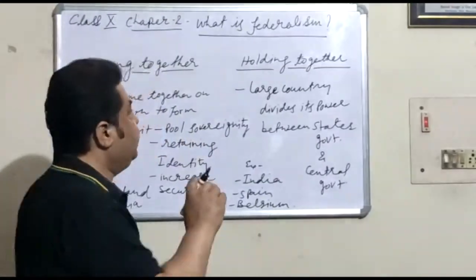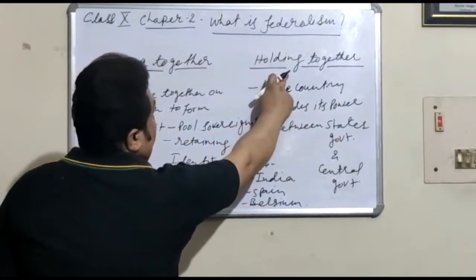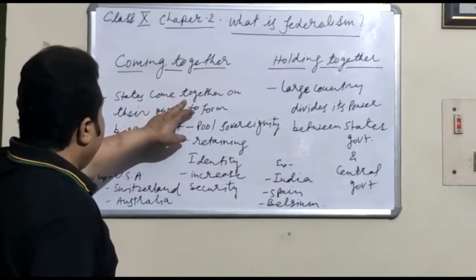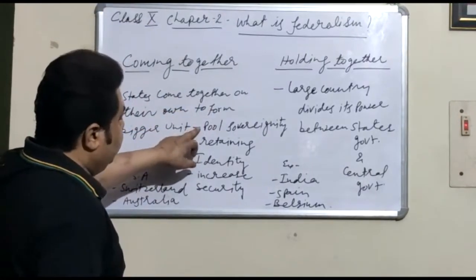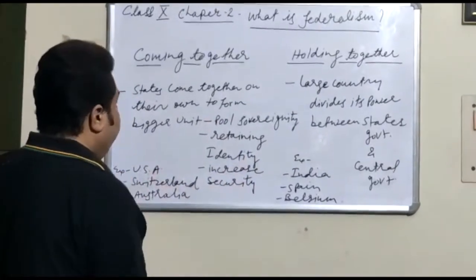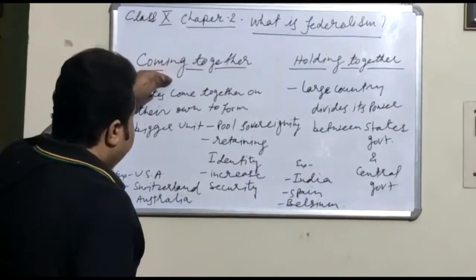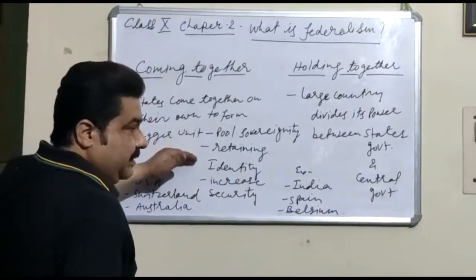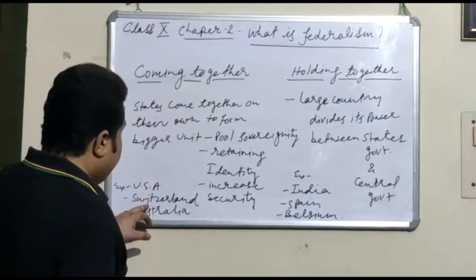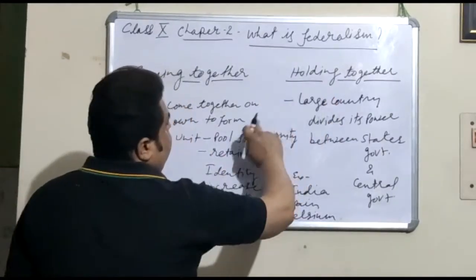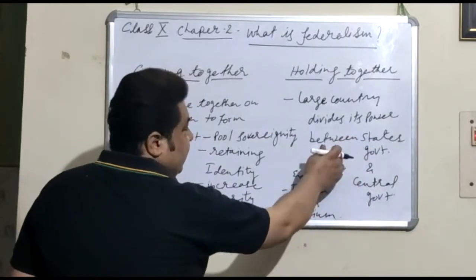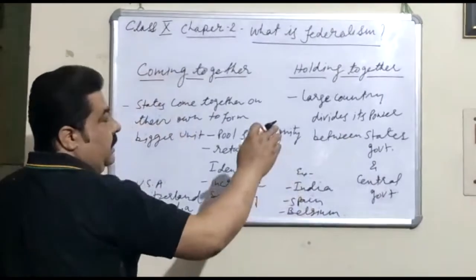There are two kinds of federations. One is the coming together federation. In a coming together federation, different states come together on their own, at their own will, and form a bigger unit. They pool their sovereignty to retain identity and increase their security, becoming more powerful. In this type, the Central Government has power and the State Government has power, and both levels have equal powers. Examples are USA, Switzerland, and Australia.